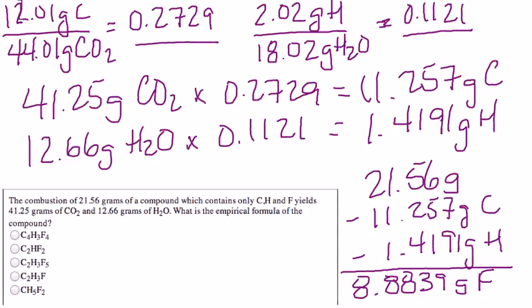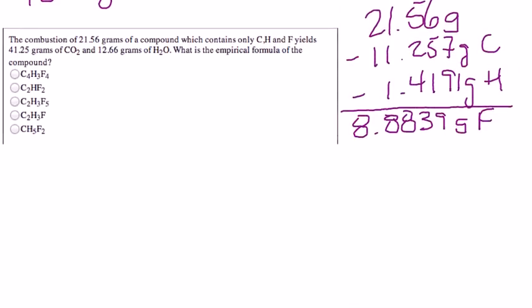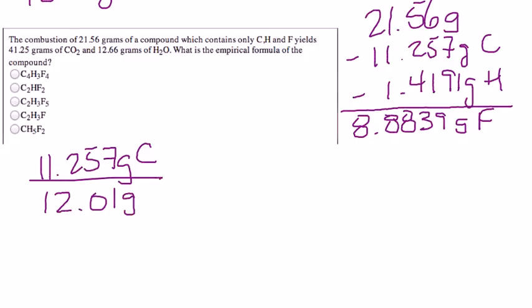Now that we have the mass of each of those we can actually determine the number of moles which we can use to find the empirical formula. So 11.257 grams of carbon divided by 12.01 grams per mole leaves us with 0.9373 moles of carbon.